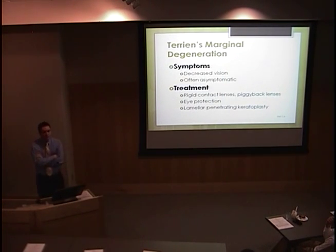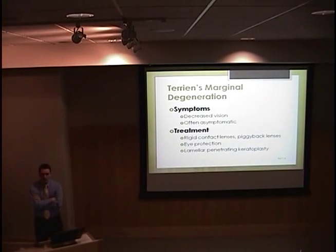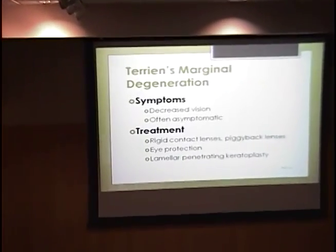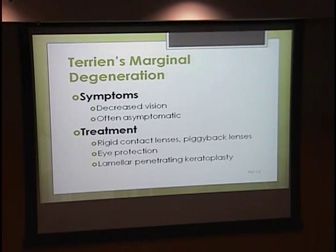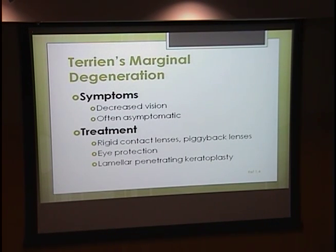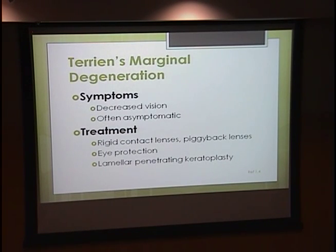Patients are usually pretty asymptomatic and don't have any complaints until the disease has progressed to the point of astigmatism, at which point it's usually just supportive care. Rigid contact lenses usually do a pretty good job of correcting the astigmatism. In more complicated cases, piggyback lenses work well. Because of the thinning, these patients are at increased risk of perforation from trauma, so we encourage eye protection. Finally, if the disease is in its most advanced stages and perforation of the cornea seems likely, there have been examples of performing lamellar penetrating keratoplasty as a more extreme measure.